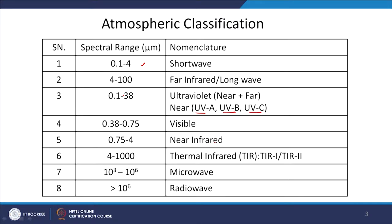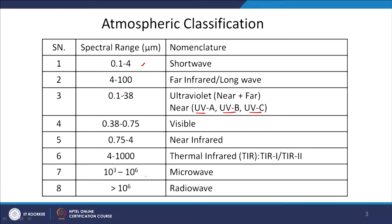The range 0.75 to 4 micron is called near infrared. The infrared is divided into near and far. Near infrared is 0.75 to 4 micron, and 4 to 1000 micron is basically designated as thermal infrared. In remote sensing, this spectrum is also divided into thermal infrared 1 and thermal infrared 2. After 1000 micron, the spectral region is the microwave region where many remote sensing applications run. Beyond 10^6 micron is the radio wave.